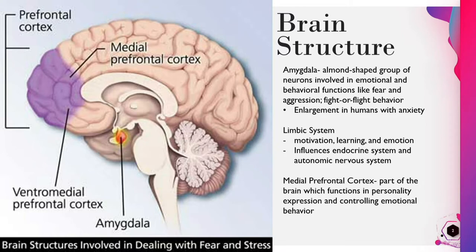The amygdala is part of the limbic system in the brain, which functions in motivation, learning, and emotions. The limbic system also influences the endocrine system and the autonomic nervous system, or the involuntary nervous system.